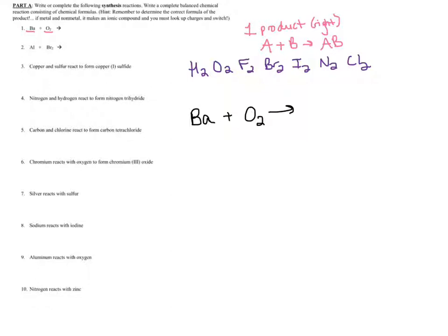If you need more help on this, I have a separate video on writing ionic compounds. So, looking up barium, it has a 2+ charge. Looking up oxygen, it has a 2− charge. You might ask — didn't you say oxygen is diatomic? Yes, oxygen is diatomic when it's found as an element by itself on the left-hand side of the reaction. But when it's in a compound, oxygen can have any subscript based on how many ions are needed to balance the charge of the positive ion.